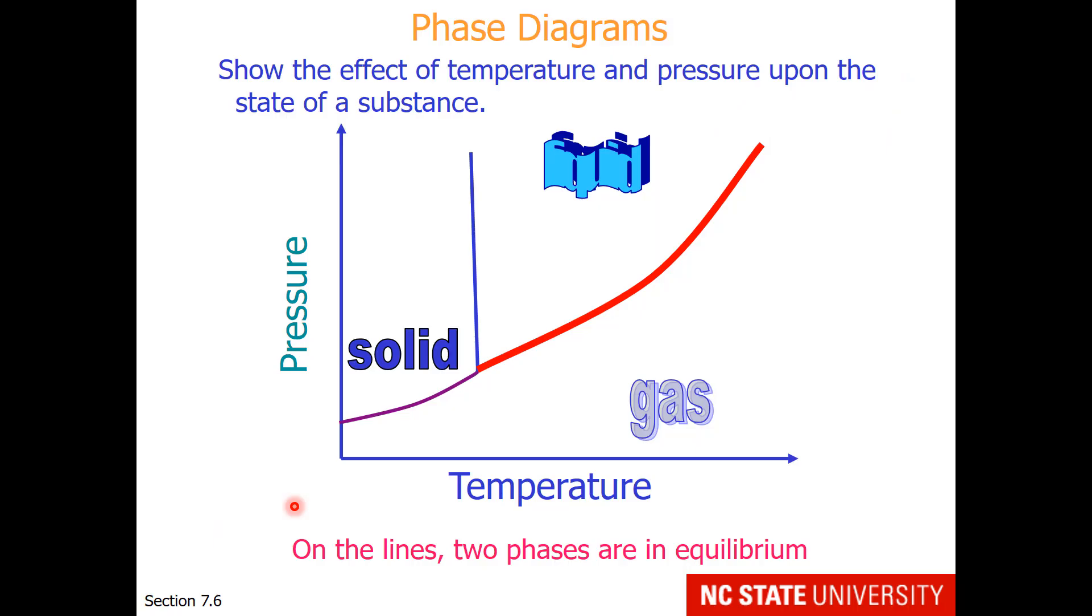So this brings up the idea of phase diagrams. Phase diagrams show the effect of temperature and pressure upon the state of a substance. Here we have temperature at the x-axis and pressure on the y-axis. In general, solid is where the temperature is low. Liquid starts when the temperature is higher and gas when the temperature is higher still and the pressure is lower. Anywhere on the lines of this diagram, two phases are in equilibrium.